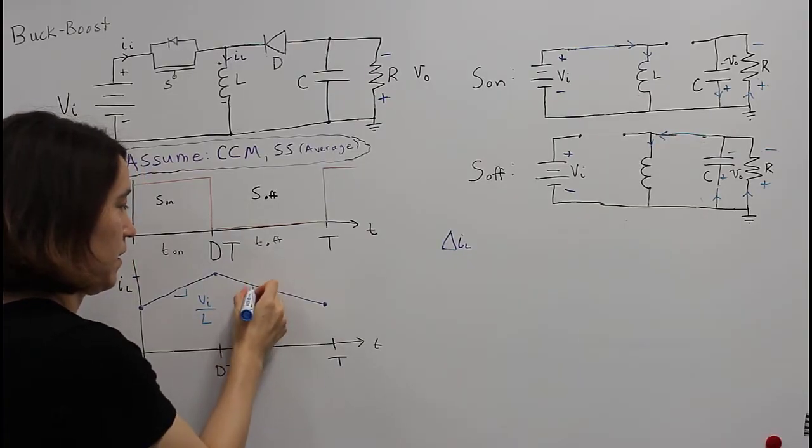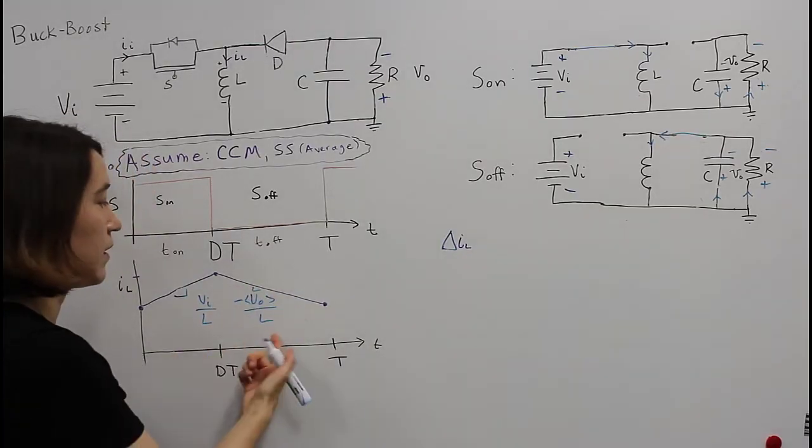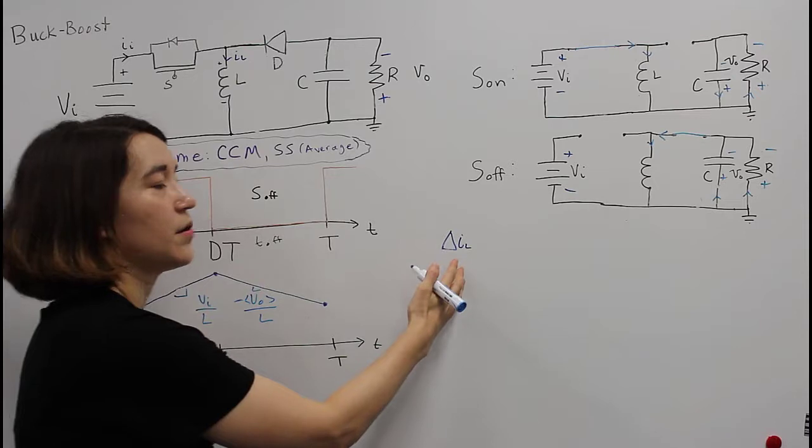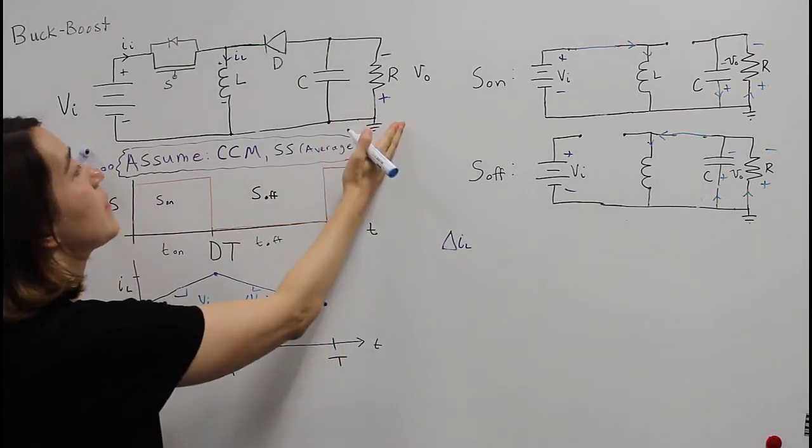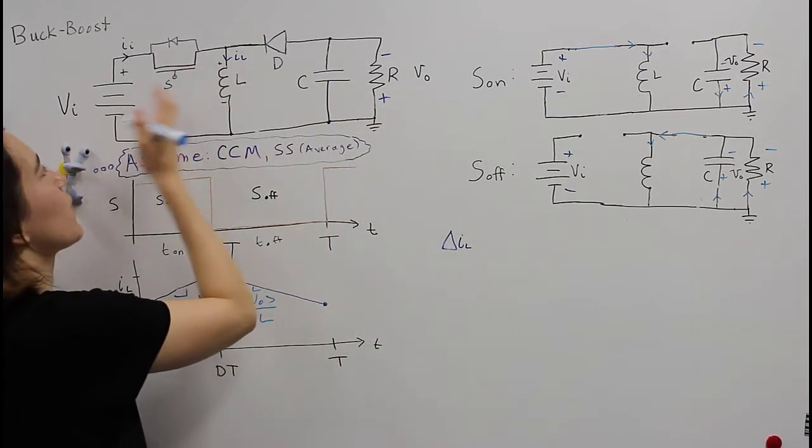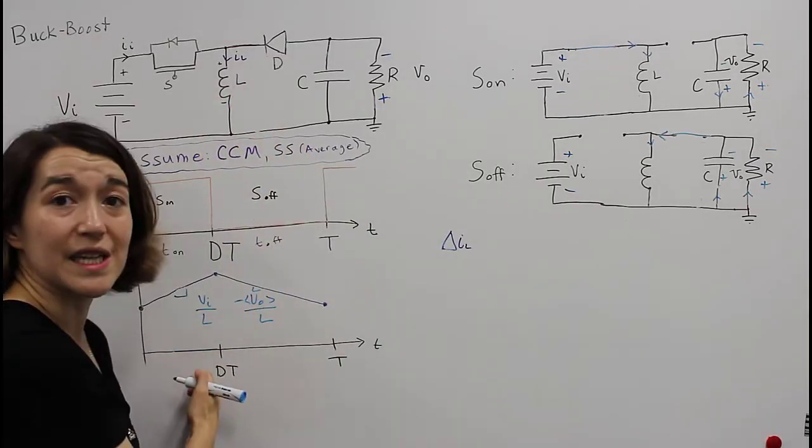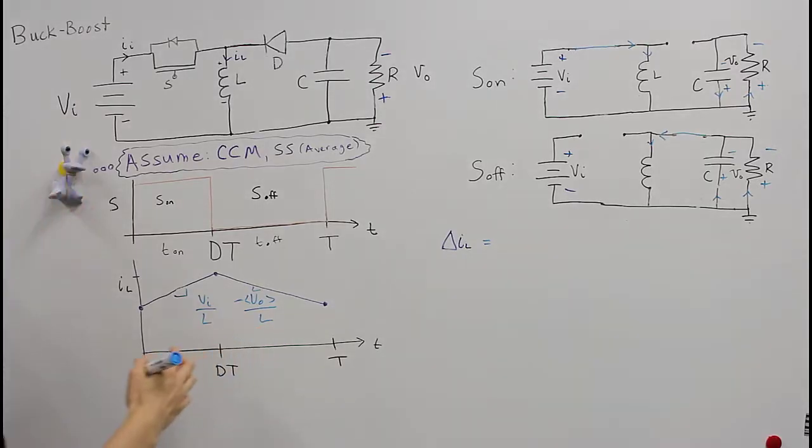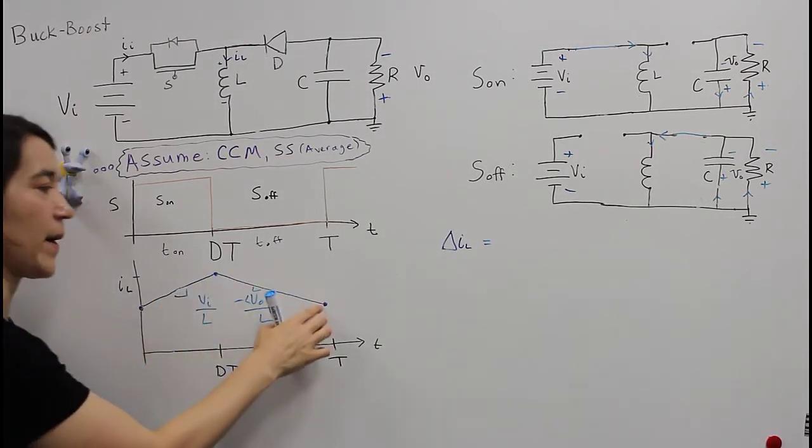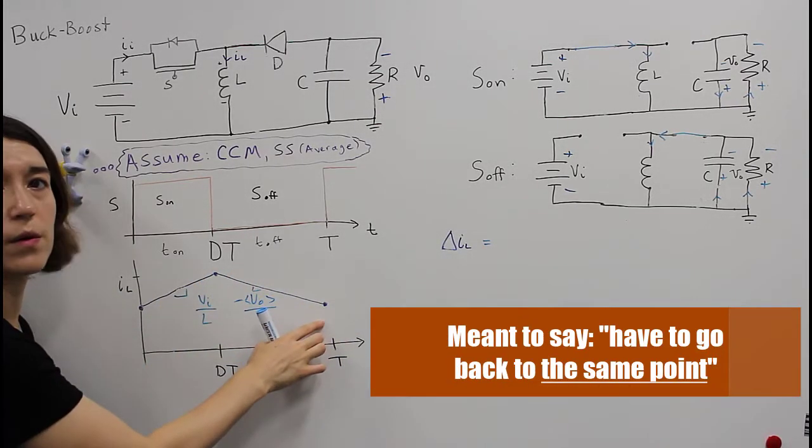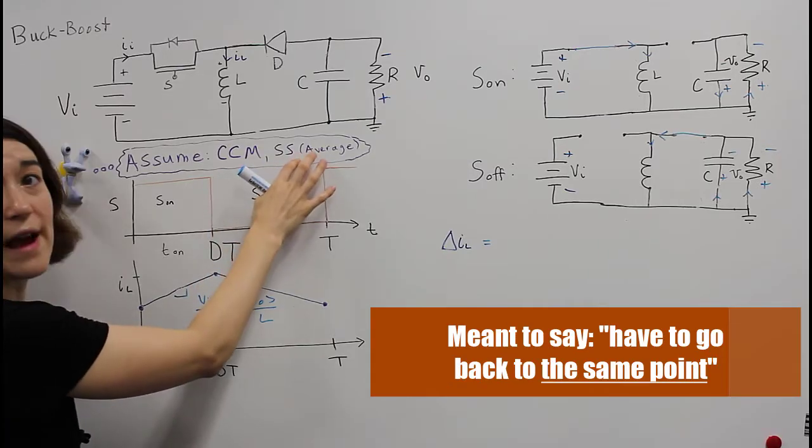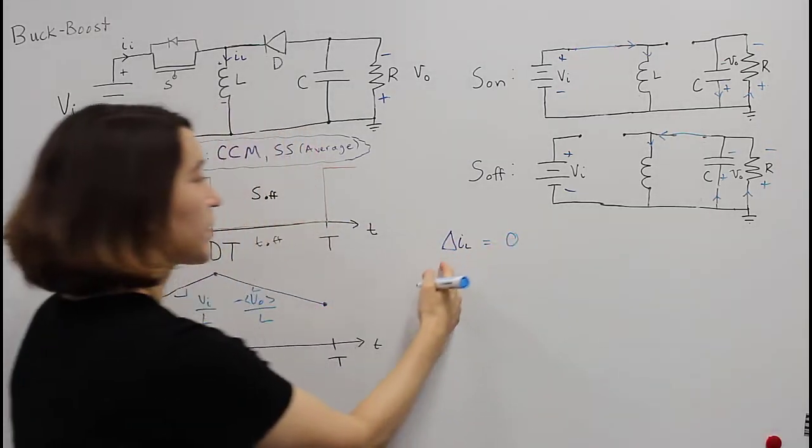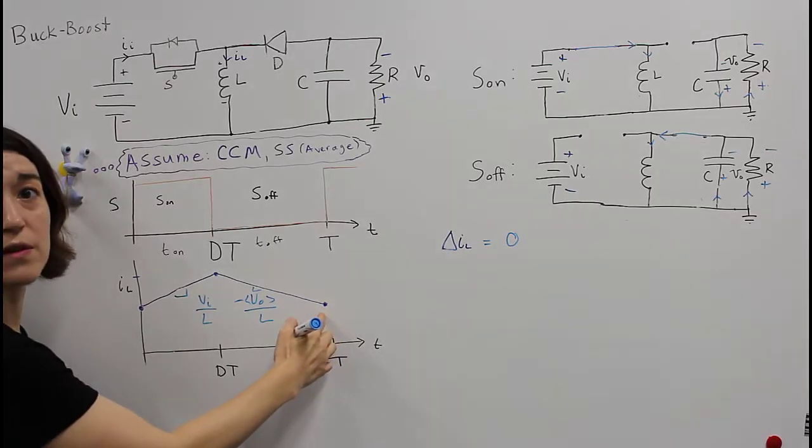So, now we can use these two relations to derive an equation that relates the output voltage, input voltage, relative to D, the duty ratio. We know that from here, if we go up and then we go back down, we have to go back to zero. Because we've assumed that we're in steady state average, we have to come back to the same point. So the overall change in current over this whole period has to be zero.